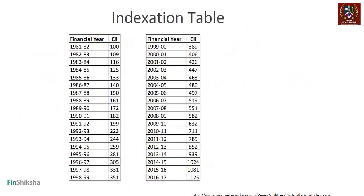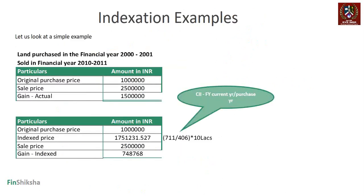The CII table started being released after 1981; before that, everything is considered at an index of 100. So if you bought a piece of land in 1975, the starting index is 100. You can look at any two years, apply the inflation measure between those two years, and calculate the inflated cost price. This table is available at incometaxindia.gov.in.